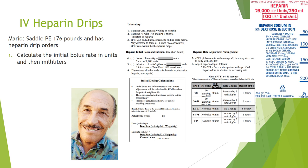Let's work through a heparin drip order. Mario was just diagnosed with a saddle pulmonary embolism, straddling the main pulmonary arterial trunk. He weighs 176 pounds. First, check the patient's baseline labs, ensure good IV access, grab tubing and the bag of heparin. Verify the orders and correct medication with another nurse. Make sure the concentration in the heparin bag is correct and consistent with the orders in the EHR. Pull up the protocol and begin with an initial bolus.